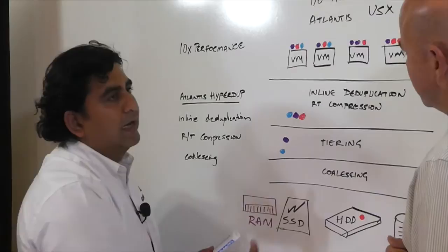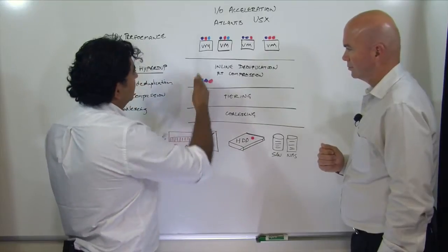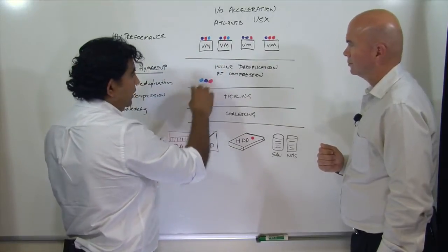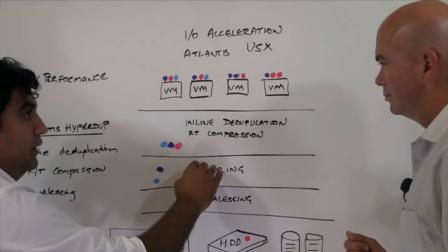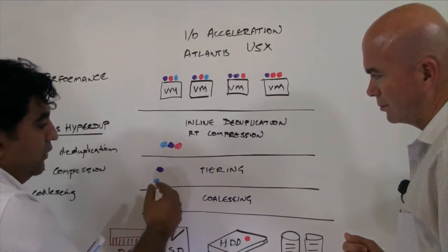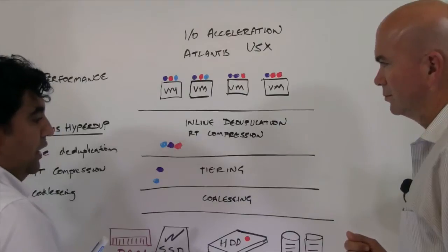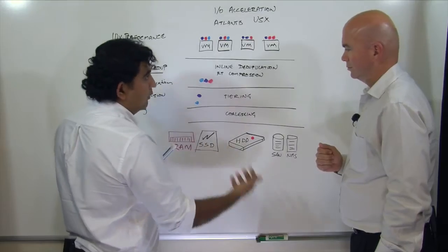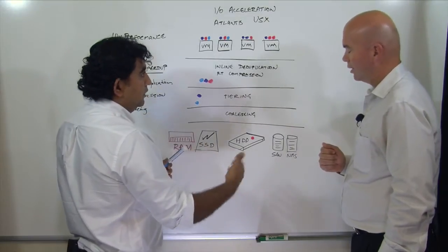Finally, when IOs are written down into storage, we coalesce them. Our deduplication happens at the 4K block level. The compression happens at variable length. And when you write things down, you really want to take advantage of the type of media that you have down here. So if you're using spindles, you really want to sequentialize the I/O as much as possible to reduce latency.